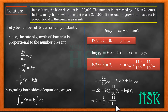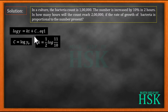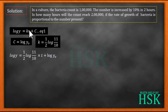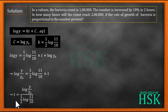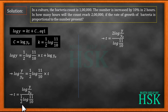So k = (1/2)·log(11/10). Now I have the values of both k and c. Placing these in equation number one and solving for t, I get log(y/y₀) = (1/2)·log(11/10)·t, which gives t = log(y/y₀) / [(1/2)·log(11/10)], or equivalently t = 2·log(y/y₀) / log(11/10). This is my final expression for time.